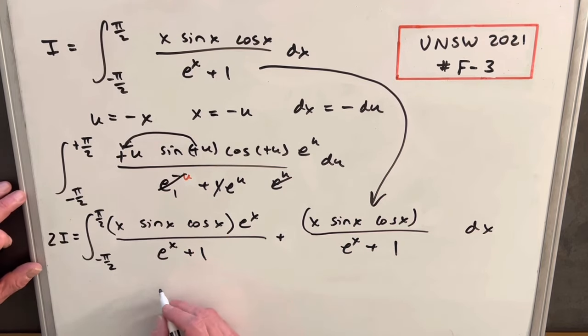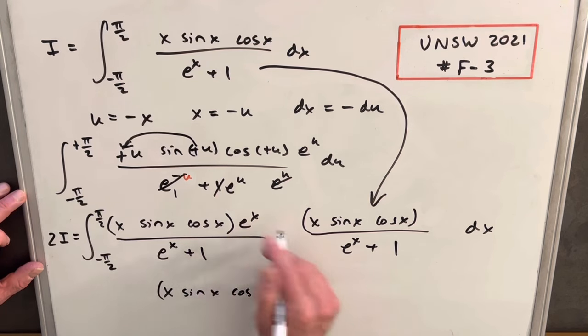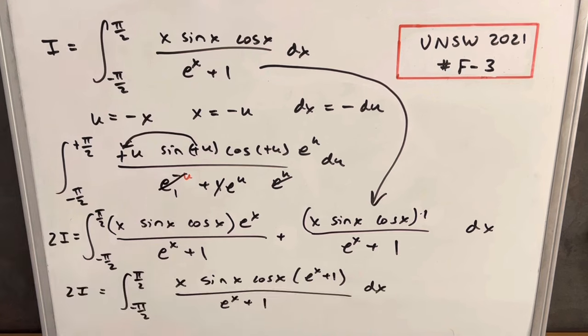We'll basically factor that out. So when I rewrite this, I'm going to write my x sine x cos x times e to the x. And then we have a one right here, so we can write this as e to the x plus one. But then what that's going to allow us to do is just do a cancellation right here because we have the same term in the numerator and denominator. And now we have our integral simplified. We don't have that problem where we're trying to deal with trig functions and e to the x in the same integral.